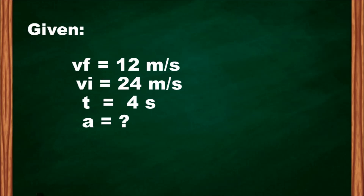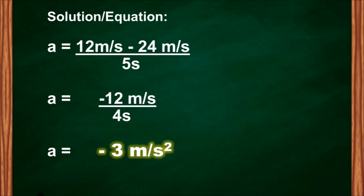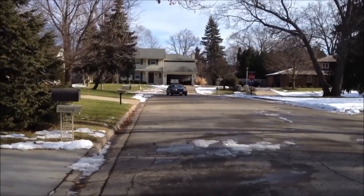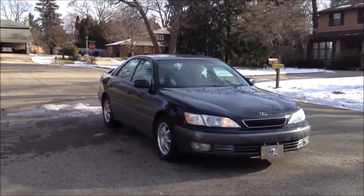Notice that the initial velocity is greater than the final velocity. Using the formula: 12 m/s − 24 m/s = −12 m/s, divided by 4 seconds, gives us negative 3 meters per second squared. We have a negative acceleration here, which means the object slows down — it decelerates. Remember: when an object slows down, it decelerates, and that is a negative acceleration.